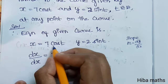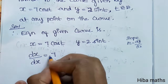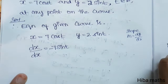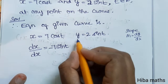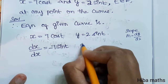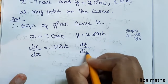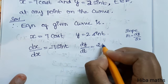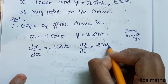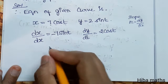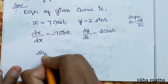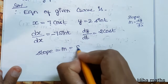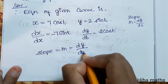cos differentiate gives minus sin t, that is dx by dt. For y, differentiate dy by dt: sin differentiates to cos, so dy by dt is plus 2 cos t. Now, slope m is equal to dy by dx.